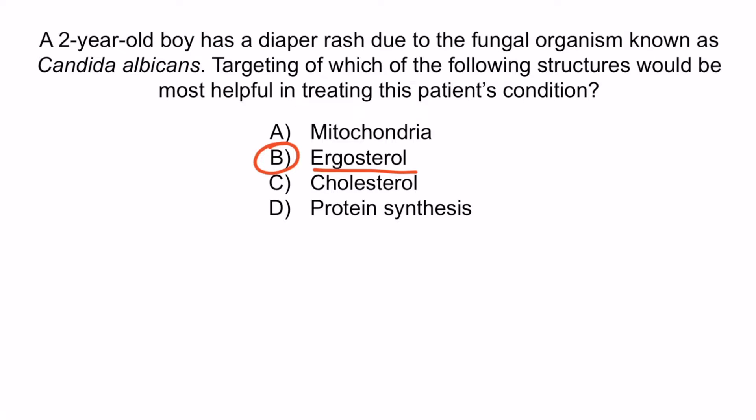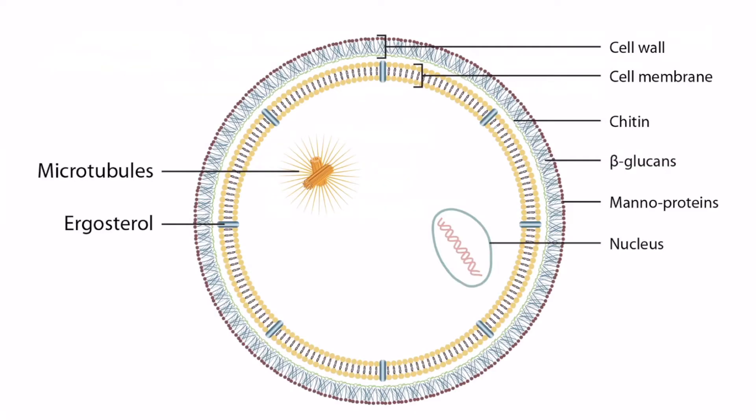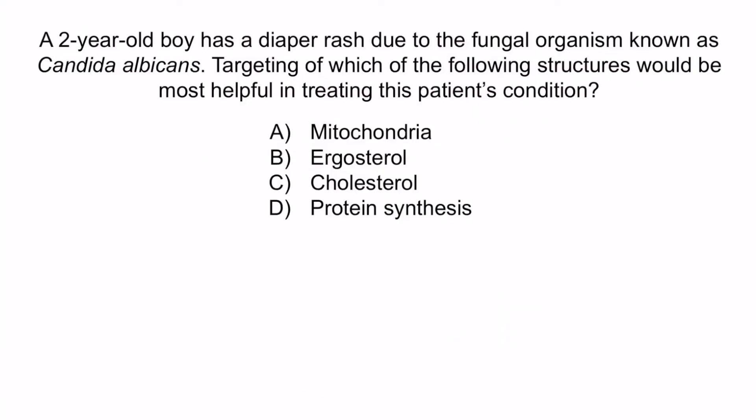Ergosterol is the only answer choice that describes a cellular structure unique to fungi. As you can see in the image, ergosterol is present in the plasma membrane of fungi and is a unique molecule from human cells, which makes it an important antifungal drug target. A, C, and D are wrong because these are all features of both fungi and human cells, so targeting these structures would most likely harm both types of cells and ultimately be unhelpful or even harmful. So the correct answer is B, ergosterol. And that concludes this section.